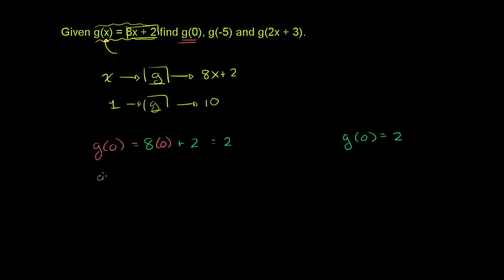g of negative 5 is equal to — it's going to be equal to 8 times our x, which in this case is negative 5 — 8 times negative 5 plus 2. We're inputting a negative 5, and we're going to output 8 times negative 5 plus 2.